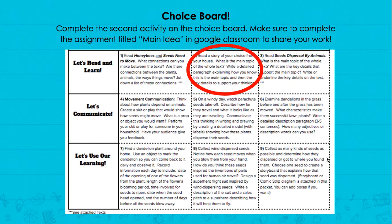Today you're going to complete the second activity on the choice board. You're going to read a story of your choice from your house, and you're going to think about what is the main topic of the whole text. After you think about that, go over to Google Classroom and complete the assignment called Main Idea so that you can share your work. Tell me the title of your book and the main idea.